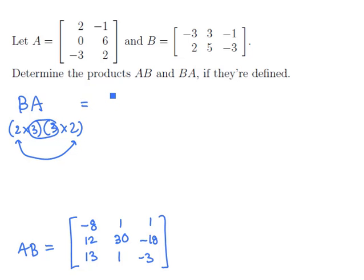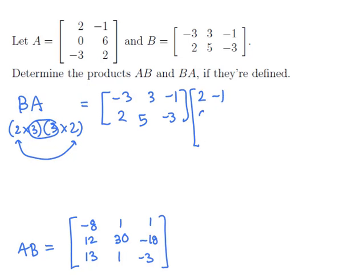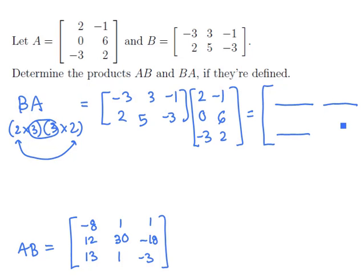B is the matrix: minus 3, 3, minus 1, 2, 5, minus 3. A is the matrix: 2, minus 1, 0, 6, minus 3, 2. Their product is going to be a 2 by 2 matrix, so we'll leave space for 4 elements — 4 dot products to work out.